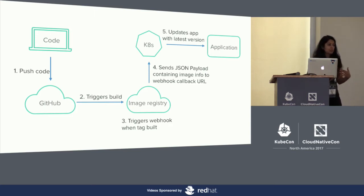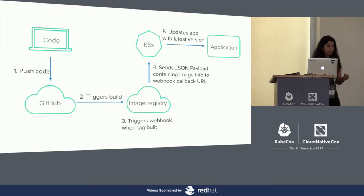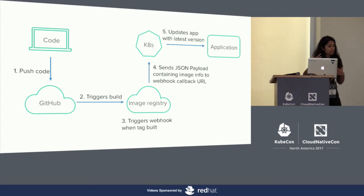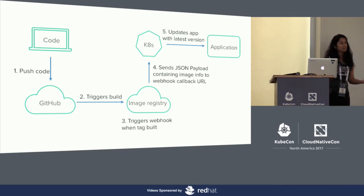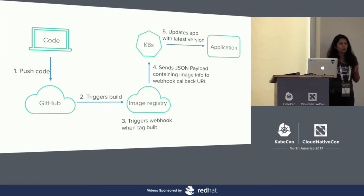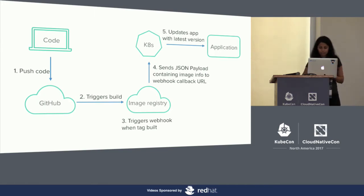We need to use some image registry that has this webhooks feature. Then we need to develop some piece of code that can actually receive this webhook, retrieve the newly built tag from that webhook information, and then actually do an update to our app running in the Kubernetes cluster. This piece of code that receives the webhook and updates our app, I'm going to refer to as the webhook receiver for the rest of the session.